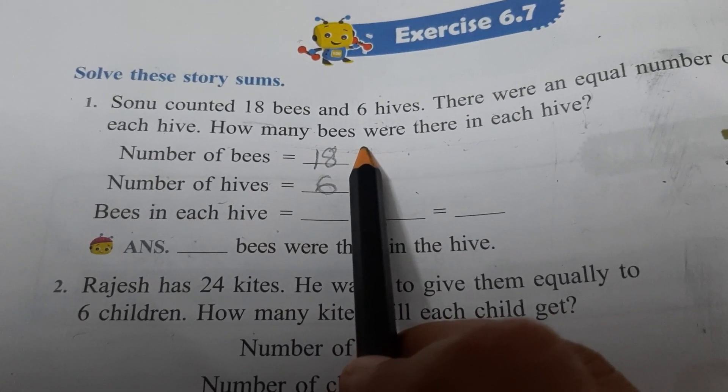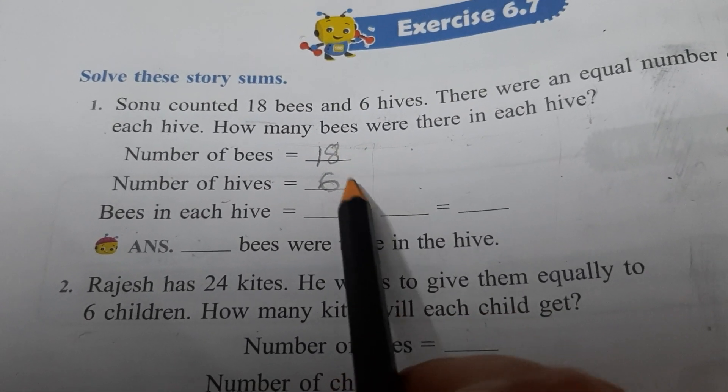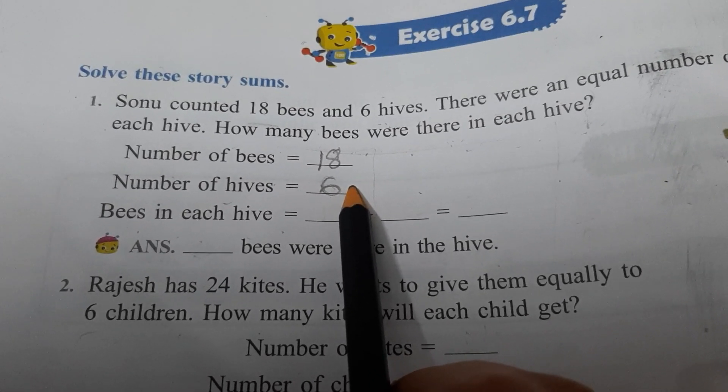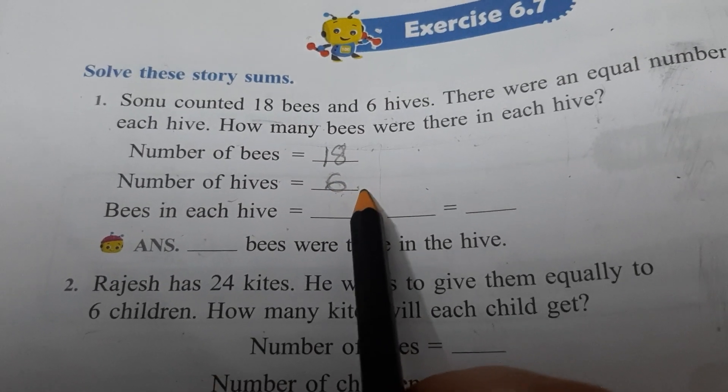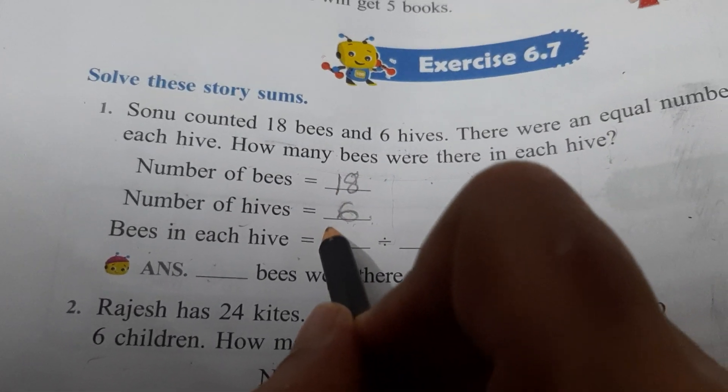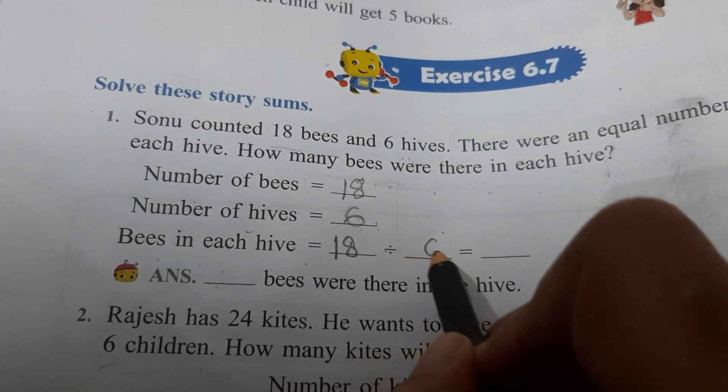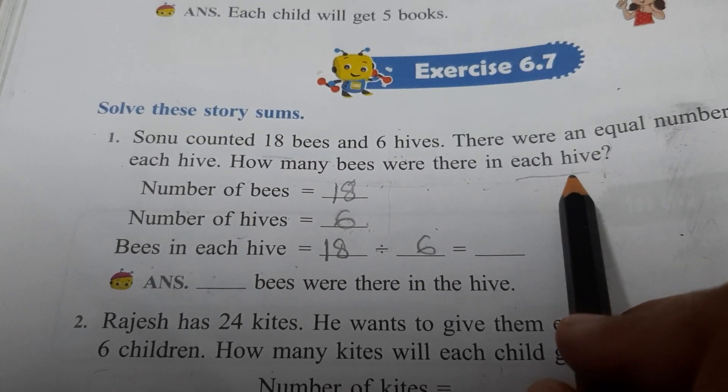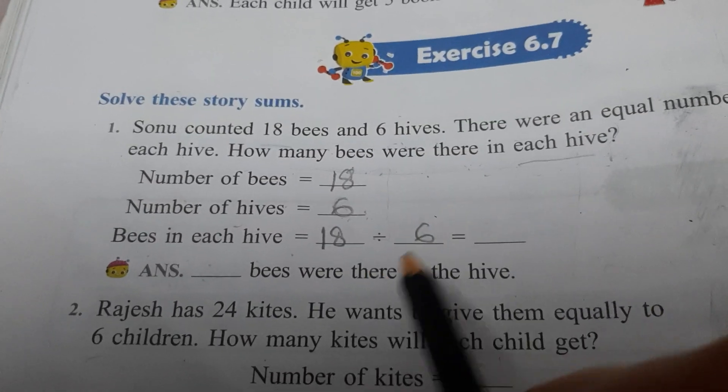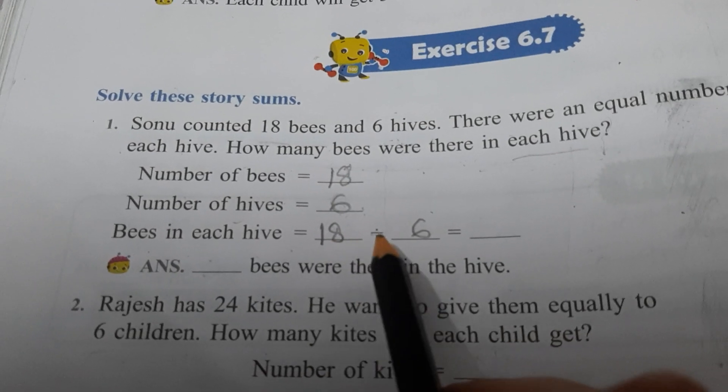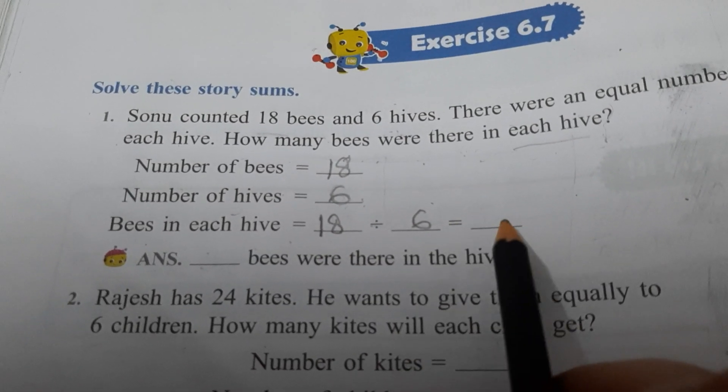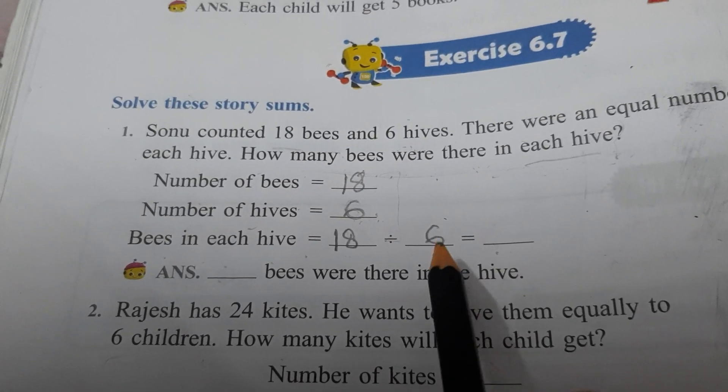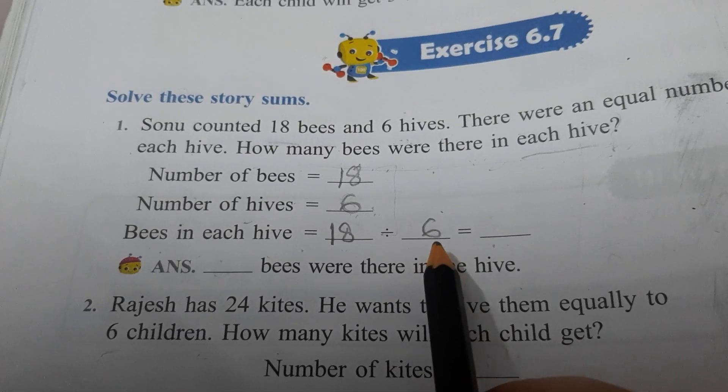So total number of bees 18 and number of hives 6. So you have to find how many bees in each hive. So the sum is of division. When you know for many and you have to find for one, it means that sum is of division. So now you know dividend, you know divisor, you have to find quotient. So how we will do that? By using multiplication tables.